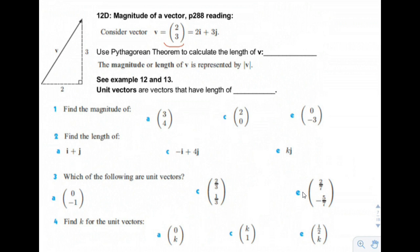We could draw it like that — 2 to the right and 3 up. Use Pythagorean's Theorem to calculate the length of the vector v. So, v squared is equal to 2 squared plus 3 squared, which is equal to 13. So the length of vector v is equal to the square root of 13.